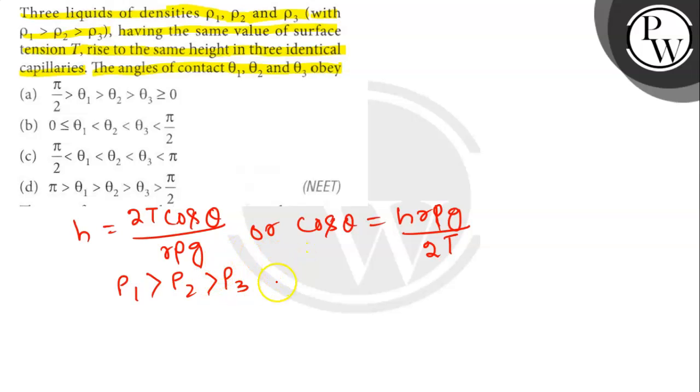Therefore, cos θ1 is greater than cos θ2 is greater than cos θ3.